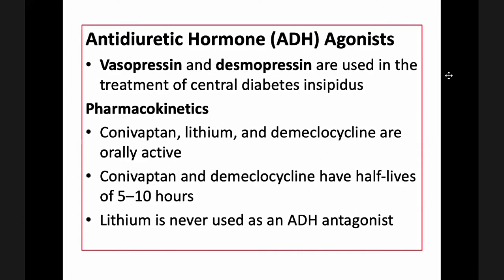Antidiuretic hormone agonists include vasopressin and desmopressin, which are used in the treatment of central diabetes insipidus. ADH antagonists include conivaptan, lithium, and demeclocycline, which are orally active. Conivaptan and demeclocycline have half-lives of 5 to 10 hours. Lithium is actually a psychiatric drug and is never used specifically as an ADH antagonist, but it has an effect similar to conivaptan and demeclocycline.